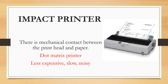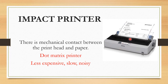In Impact Printer, there is mechanical contact between the print head and paper. An example of Impact Printer is the dot matrix printer, which also has mechanical contact between paper and print head. Features of this printer are: it is less expensive, slow, and noisy.